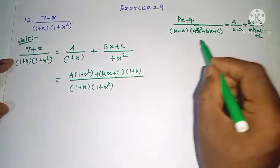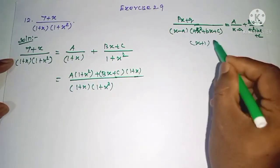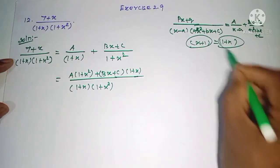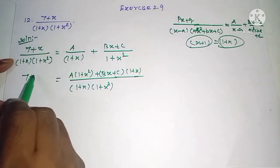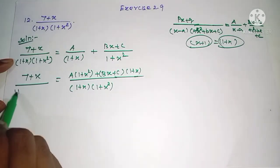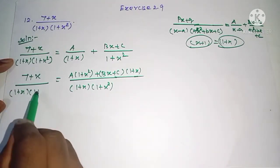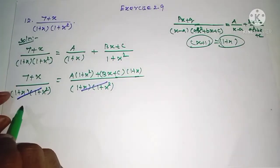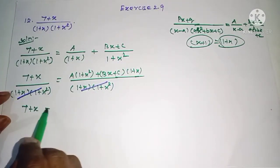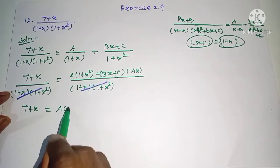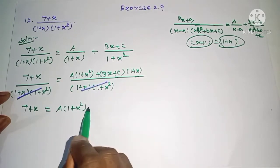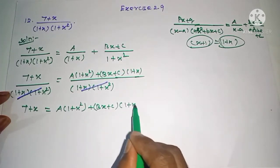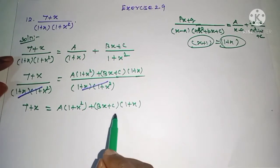Note that (x + 1) is the same as (1 + x). The left side is (7 + x) divided by (1 + x)(1 + x²). After cancelling the common denominator on both sides, we get: 7 + x equals A(1 + x²) plus (Bx + C)(1 + x). Now we will find the values of A, B, and C.